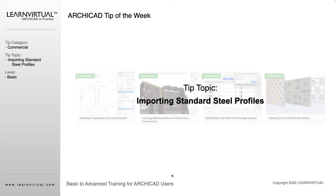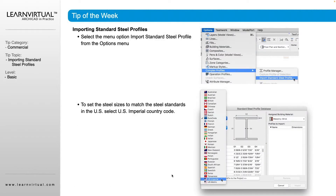Let's take a look at our tip of the week. Today we're going to be talking about importing standard steel profiles. A lot of times when we're using a fairly standard steel profile, it doesn't always make sense time-wise to create a custom profile for it. Custom profiles are great for those less common instances, but a lot of times we're going to be able to find these profiles within our steel structure library.